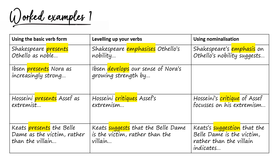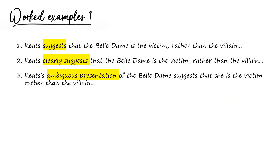Last one — thinking about Keats and the poem La Belle Dame Sans Merci. 'Keats presents the Belle Dame as the victim rather than the villain.' When I really think about it, that poem is quite ambiguous as to whether the Belle Dame is victim or villain — you can argue it both ways. So instead of that assertive verb, I'll use a tentative one: 'Keats suggests that the Belle Dame is the victim.' Or using nominalisation: 'Keats's suggestion that...'